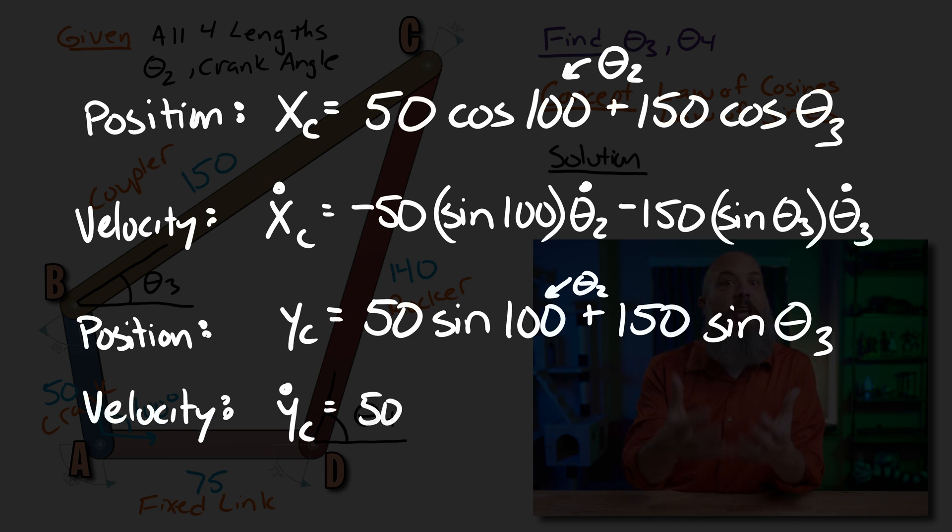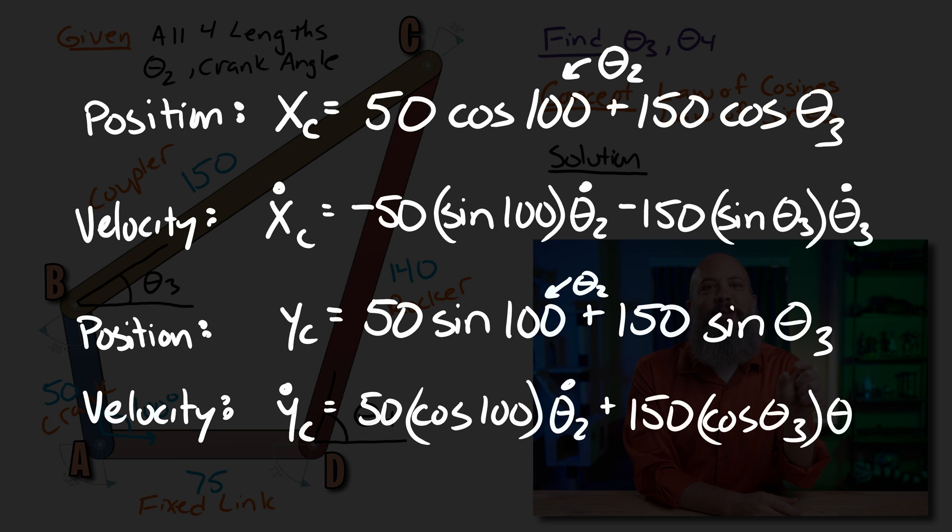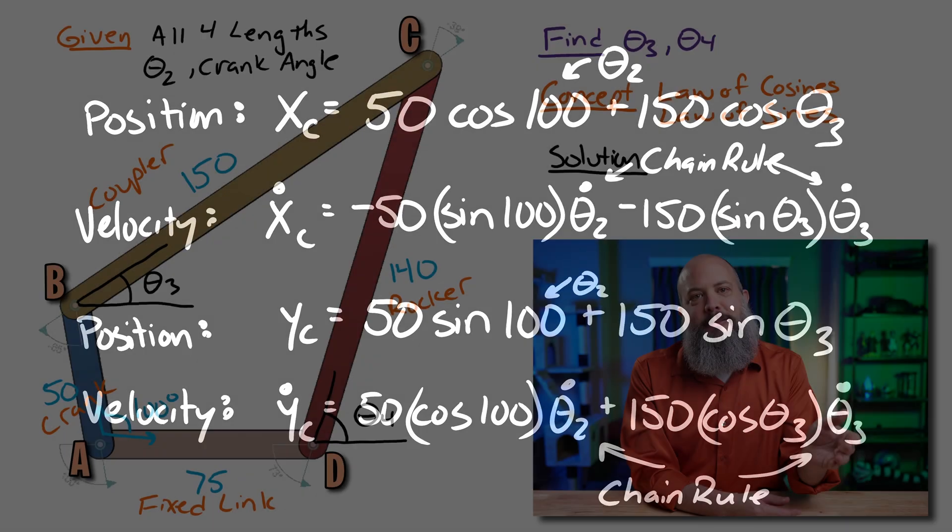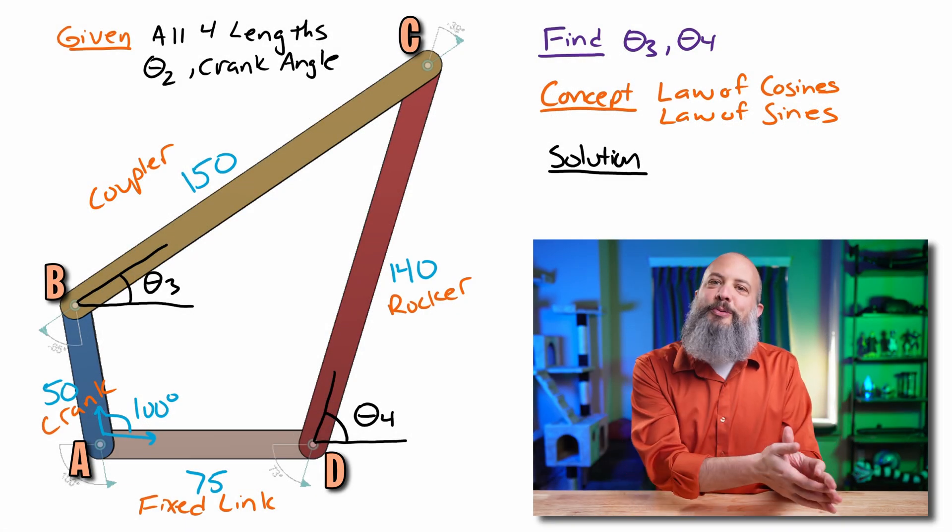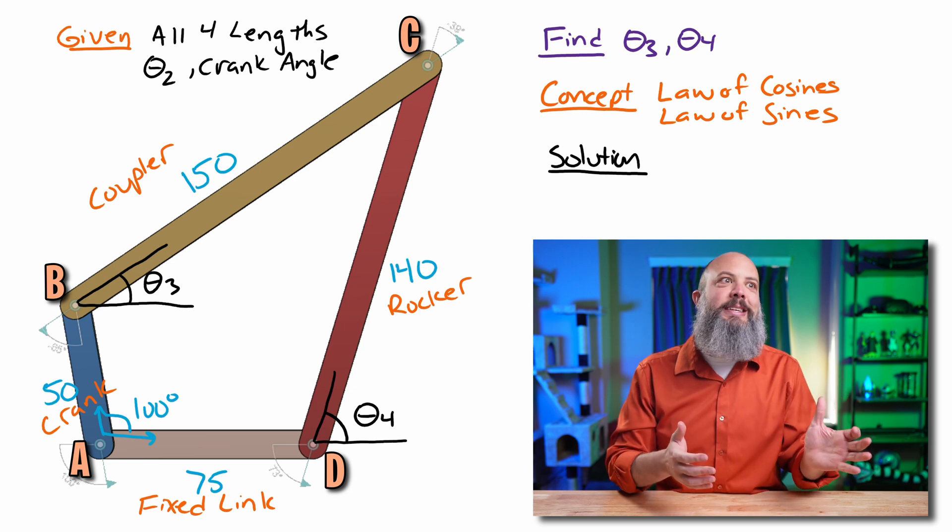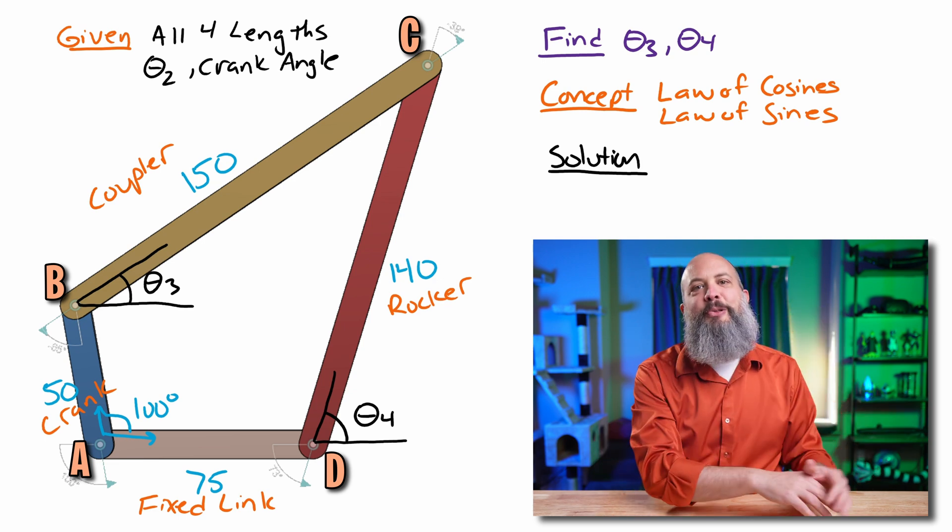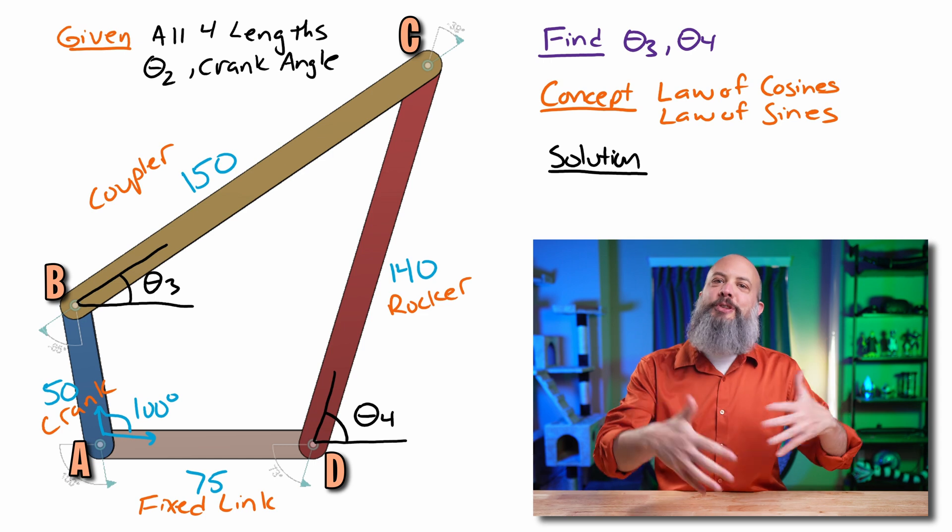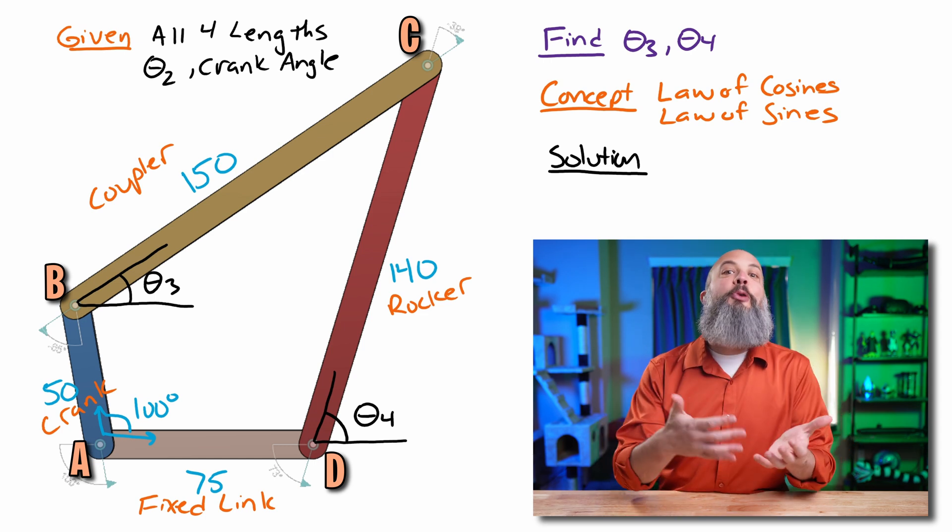And then because of the chain rule and that 100 degree angle is changing, you'd also get a times theta 2 dot where that 100 degrees is theta 2. And then minus 150 sine theta 3 times theta 3 dot. So finding the angle theta 3 is what we'll do today. Finding the time derivative of theta 3 is something for a whole other video later on. But you can keep this conversation going by going after acceleration also.